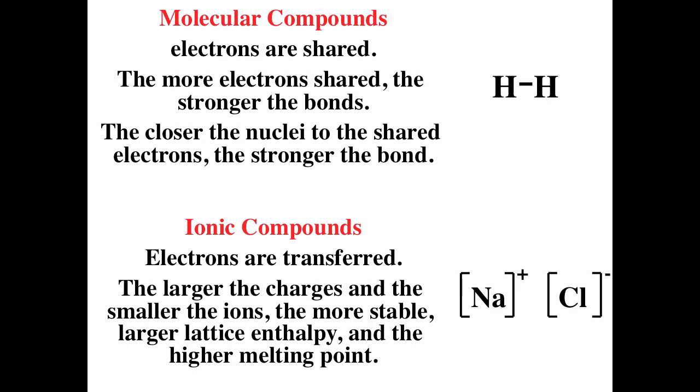To get noble gas configuration, sometimes elements can lose or gain electrons. Metals typically react by losing electrons, and non-metals typically react by gaining electrons. When a metal plus a non-metal react, they typically form an ionic compound — the metal loses an electron getting a noble gas configuration, and the non-metal gains an electron, getting a noble gas configuration. There is a transfer of electrons.